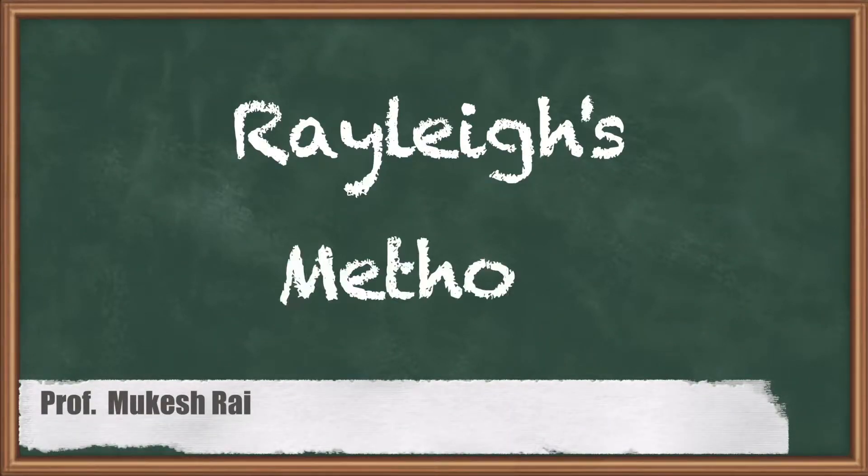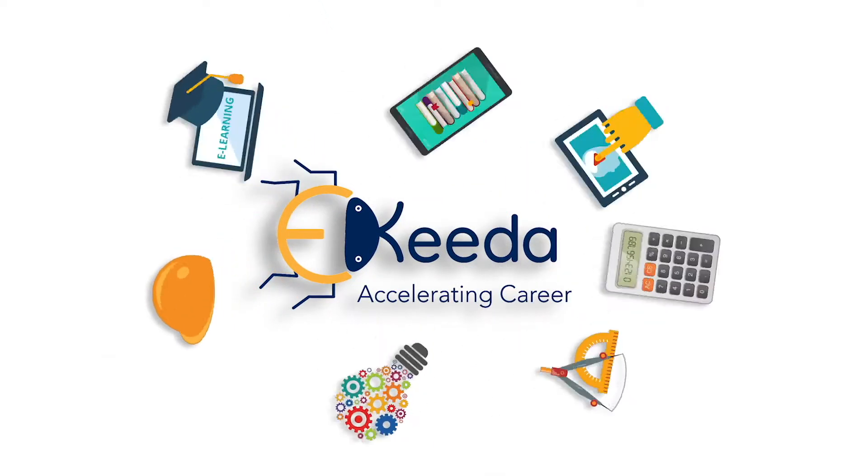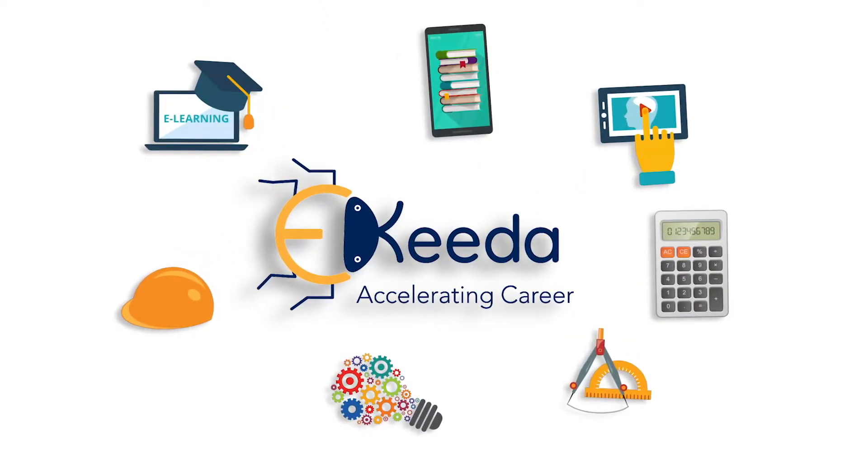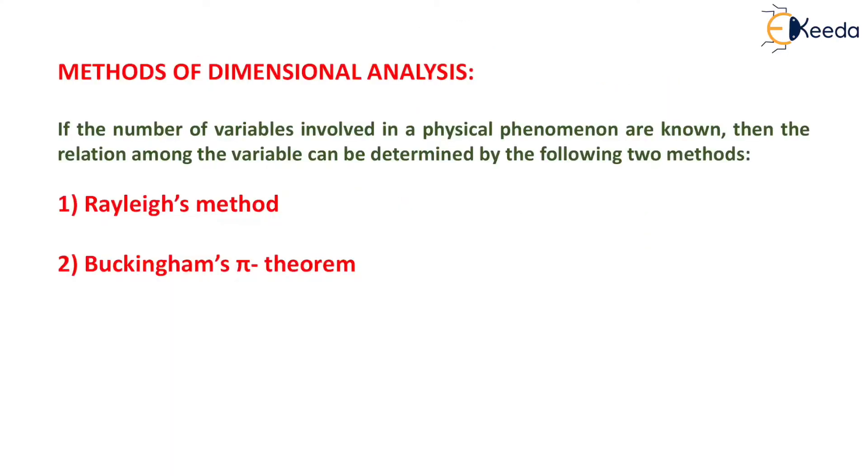Hello students, today we are going to study Rayleigh's method. Now the first topic is method of dimensional analysis. If the number of variables involved in a physical phenomenon are known, then the relation among the variables can be determined by the following two methods.